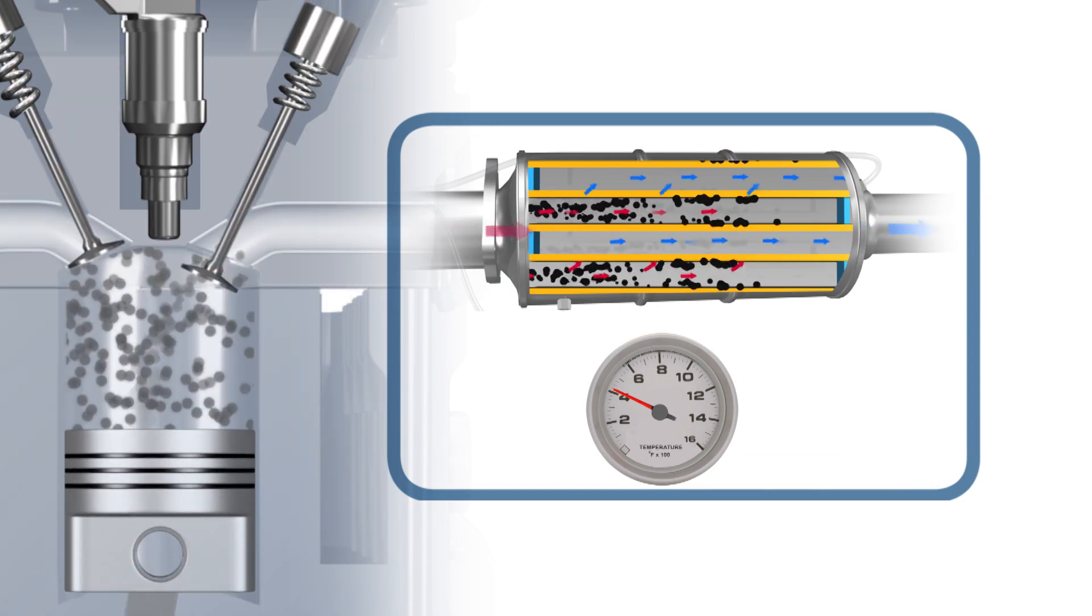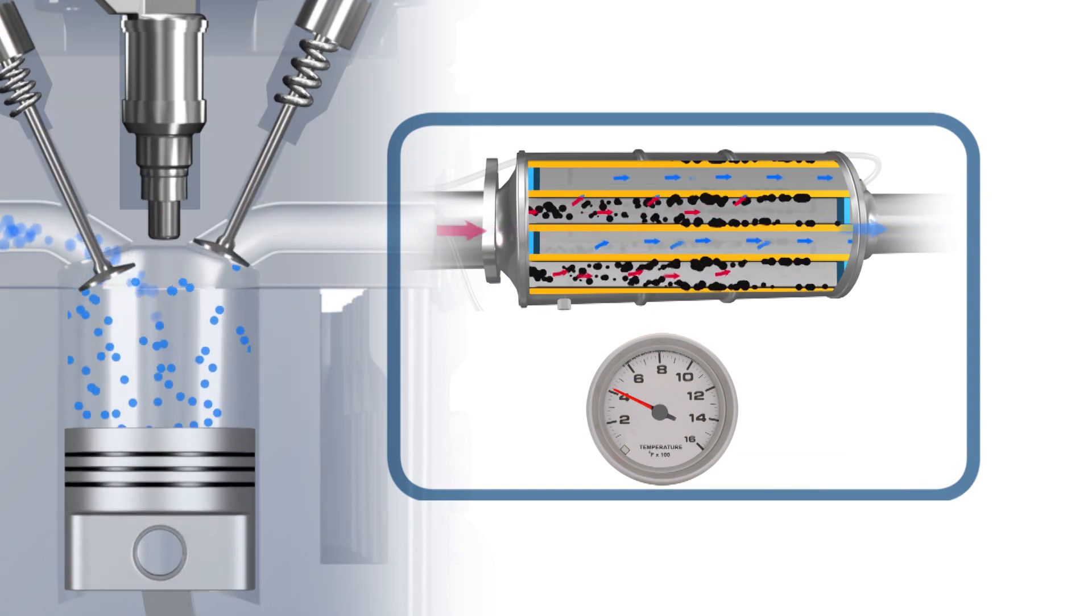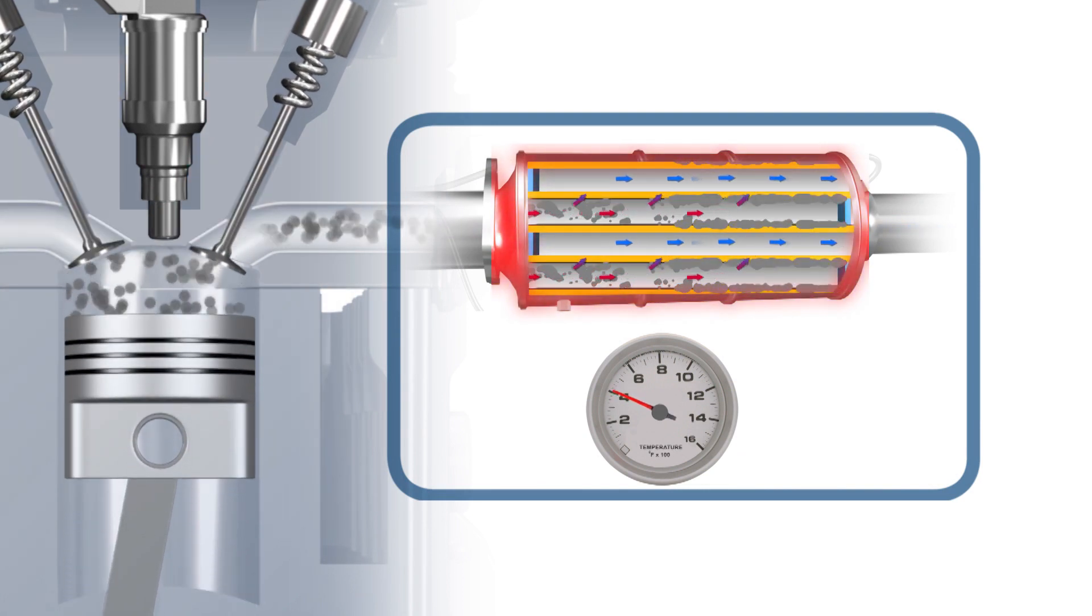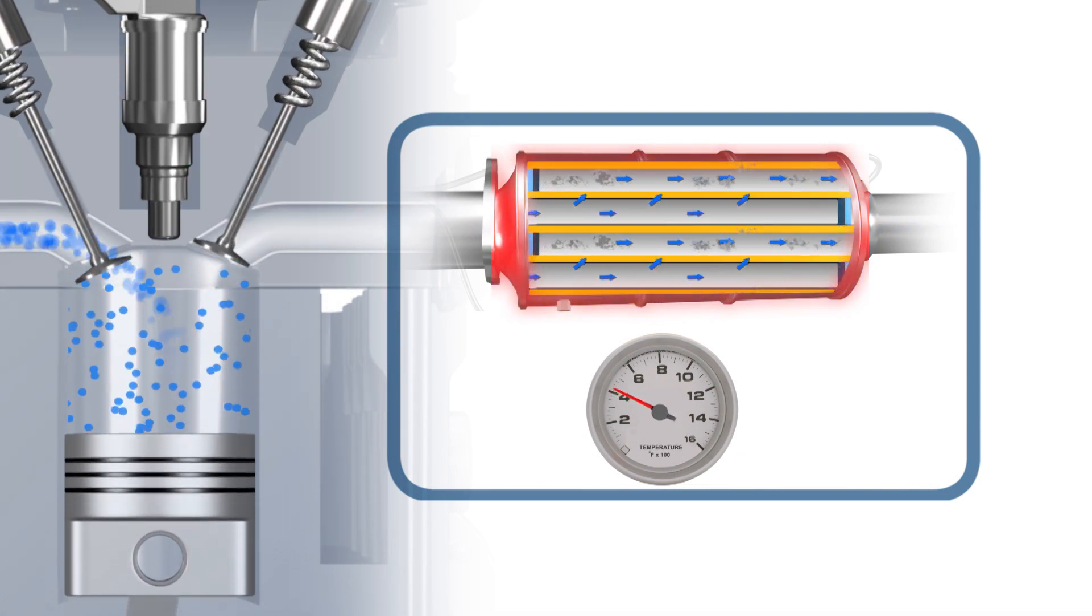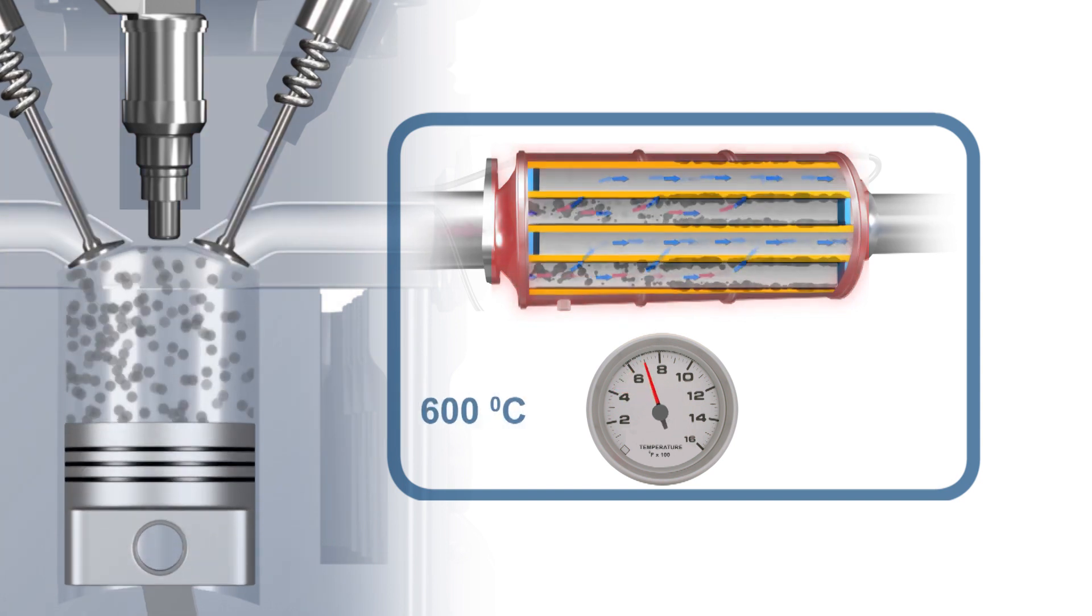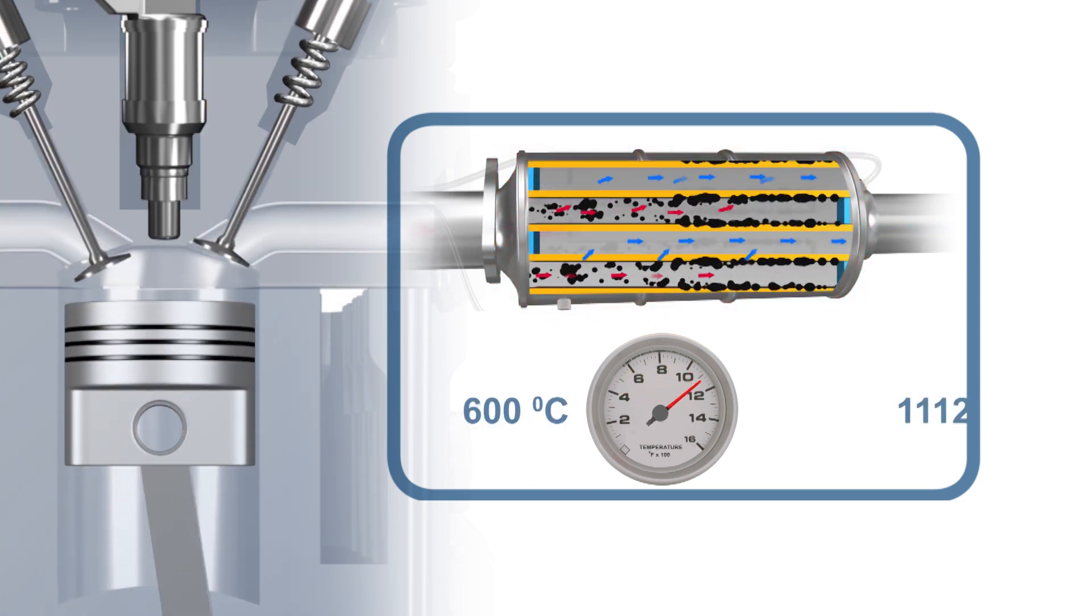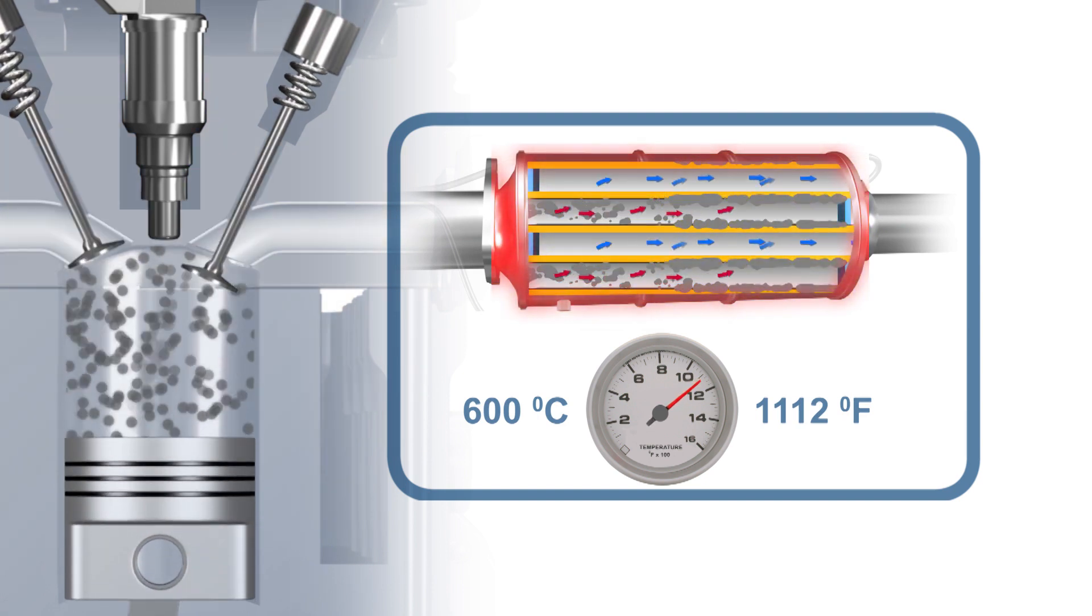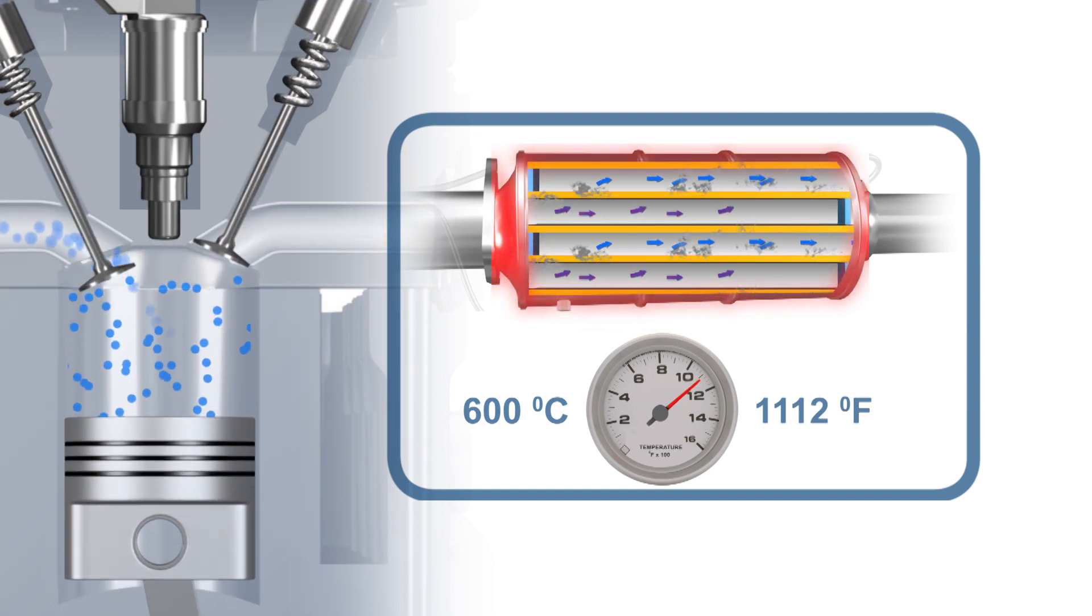During regeneration additional fuel is injected via multiple post injections in order to increase the exhaust gas temperature. During this period the DPF temperature is raised to approximately 600 degrees Celsius or 1100 degrees Fahrenheit and the accumulated soot is oxidized or burned off as CO2.